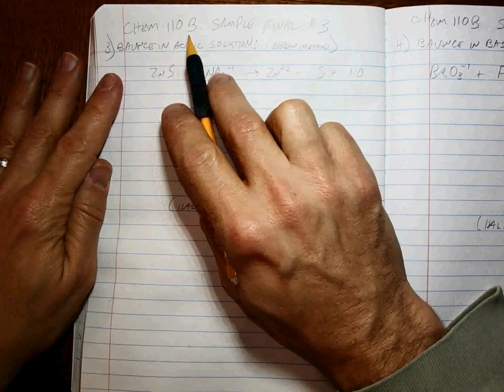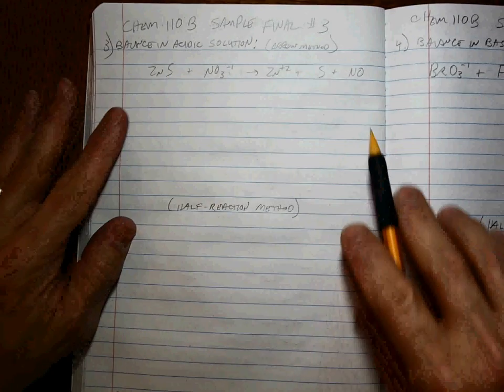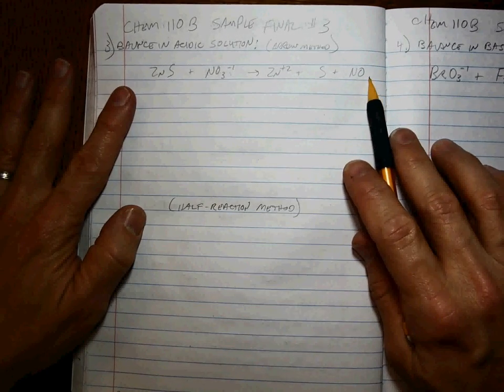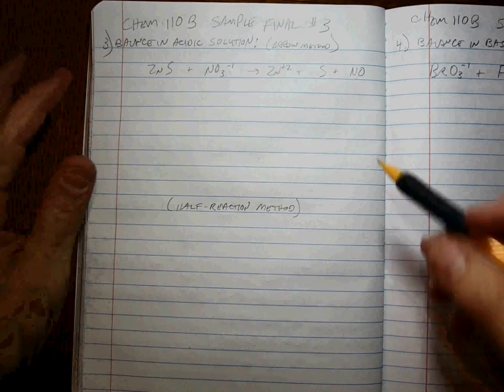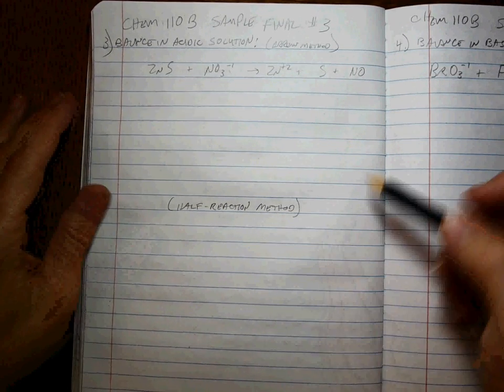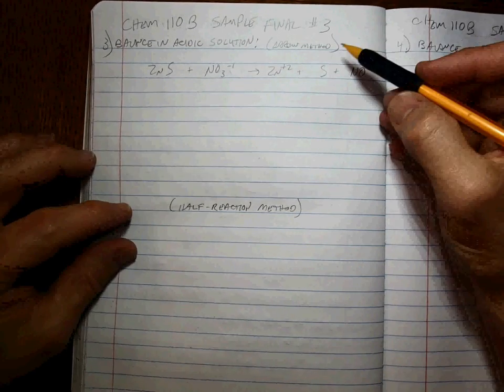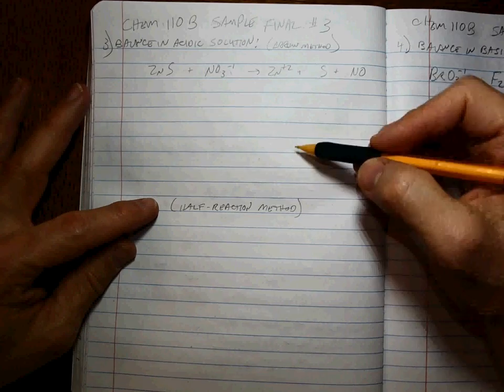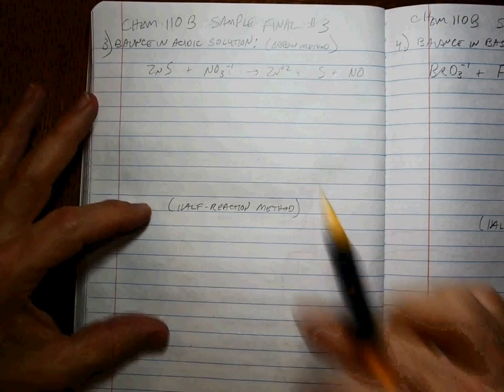And we're off. Chem 110B sample final number three. We're going to balance an acidic solution, but this is the one where the H+ and the OH- aren't shown where they go, but it's easy enough to do. We'll do it by the arrow method and by the half reaction method. Again, if you like the arrow method, just show that or look at that one. If you like the half reaction method, skip the arrow, go there.